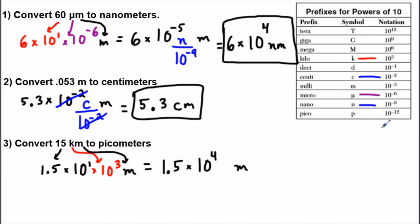I need to use this prefix. And the lowercase p for pico corresponds to 10 to the negative 12 power. So I'm just going to write a 10 to the negative 12 in my denominator here.